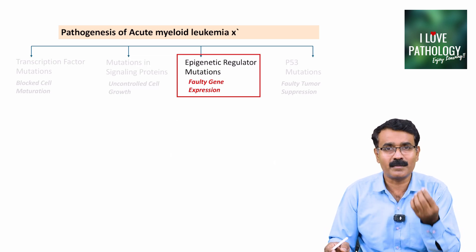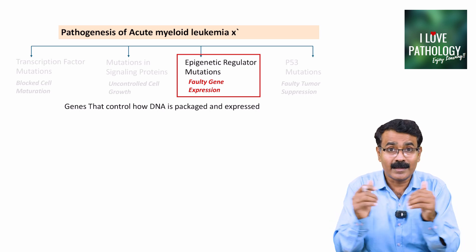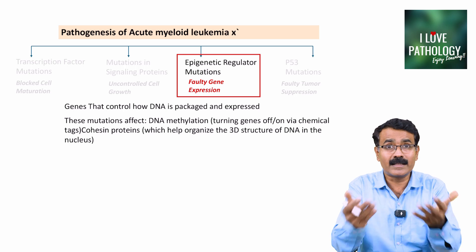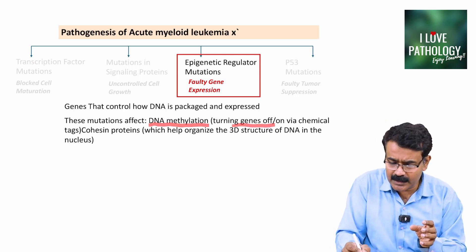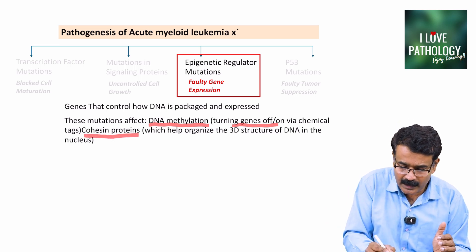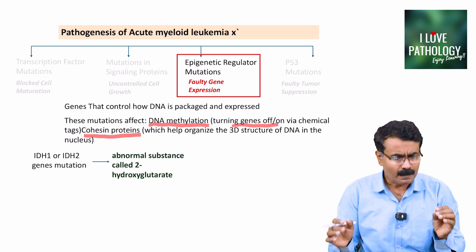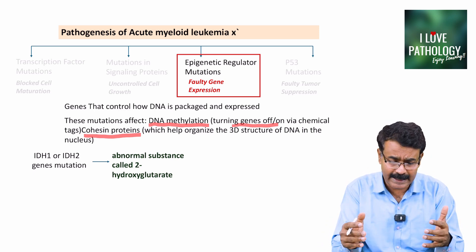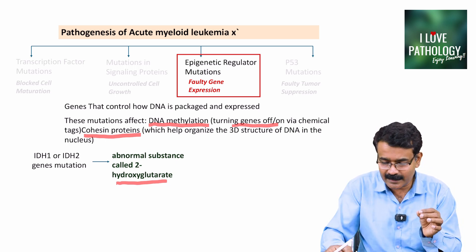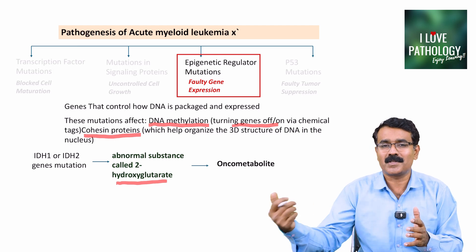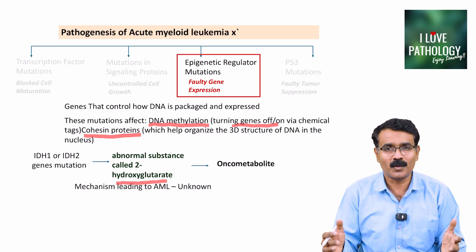The third is epigenetic regulator mutations resulting in faulty gene expression. Genes control how DNA is packaged and expressed, and mutations involving these genes can affect DNA methylation — which turns genes on or off via chemical tags — and can also affect cohesin proteins, which help organize the 3D structure of DNA within the nucleus. For example, IDH1 and IDH2 gene mutations result in formation of 2-hydroxyglutarate, an oncometabolite leading to AML, though the exact pathogenesis is not fully known.